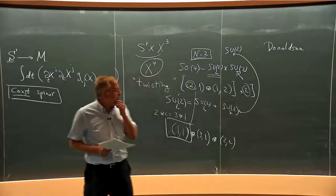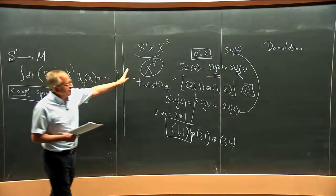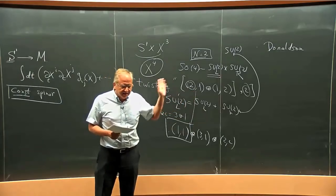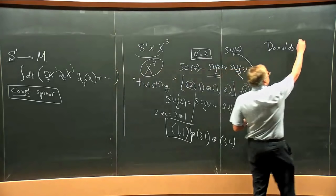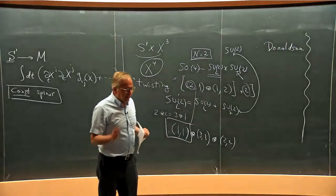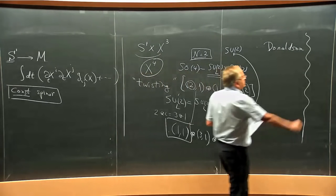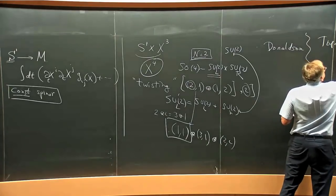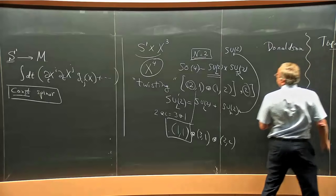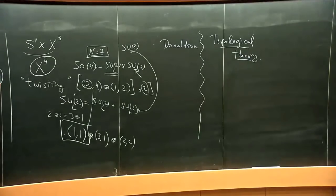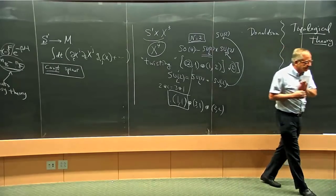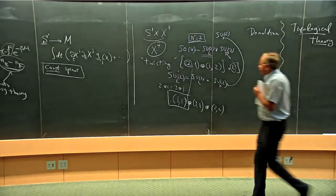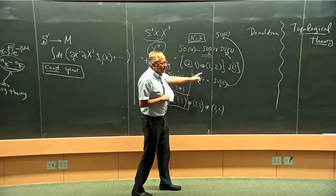So this is the relation between supersymmetric theories and topological theories in the 80s and early 90s. Parallel to this and alongside, there was another development — originated mainly by the work of Witten on Chern-Simons theory. This is another kind of topological theory. In this case, the theory does not depend on details — the theory does not depend on the radius of the manifold or the metric on the manifold, just because the action doesn't depend on it.